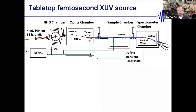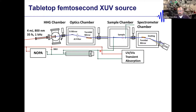We're doing pump-probe spectroscopy, with optics that can change the color of our pump beam to basically any color of the rainbow. We cross that onto our sample to excite it before probing. We can also do UV-Vis transient absorption simultaneously.